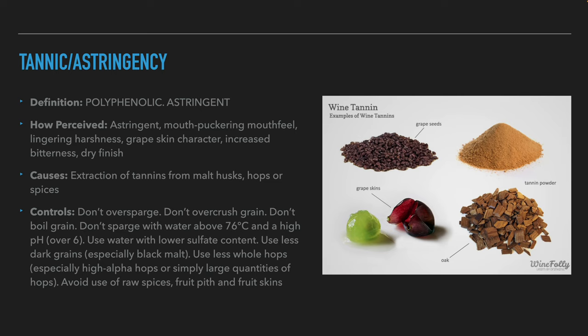After alcohol, let's talk about astringency or tannins. These flavors are caused by polyphenols that create astringency. We perceive these flavors as astringent, causing a puckering sensation in the mouth, a harsh sensation that lingers, increased bitterness or a dry finish. The reasons why we get high tannins in beer will usually be extraction from the malt, husks or hops, additions of wood, astringent or bitter herbs, spices or other tannic fruits found in the beer.